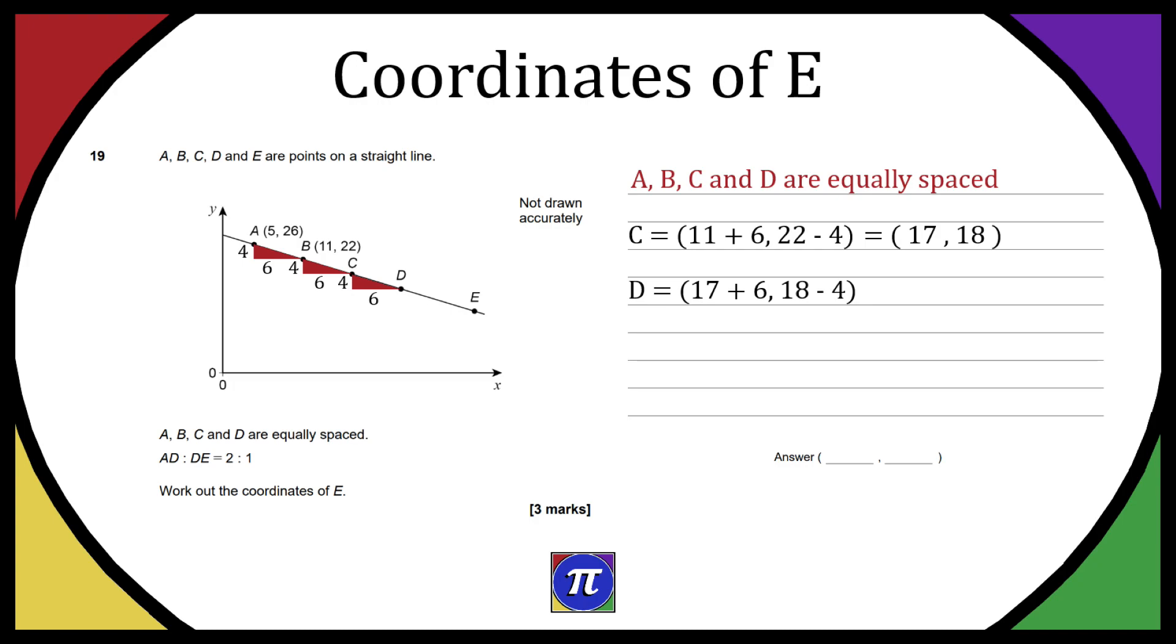Next we have D which is point (17, 18) plus 6 on the x-axis and minus 4 on the y-axis, so D is going to be equal to (23, 14).